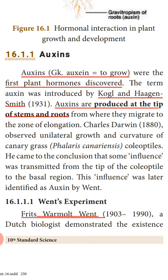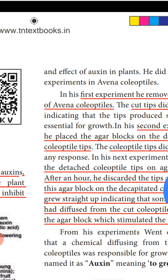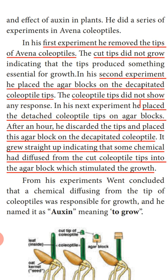Fritz Went (1903–1990), a Dutch biologist, showed the effect of auxins in plants. He explained what chemical substance is present in the tip of the plant and what role it plays — this is demonstrated through Went's experiment. He performed a series of experiments on Avena coleoptile plants.